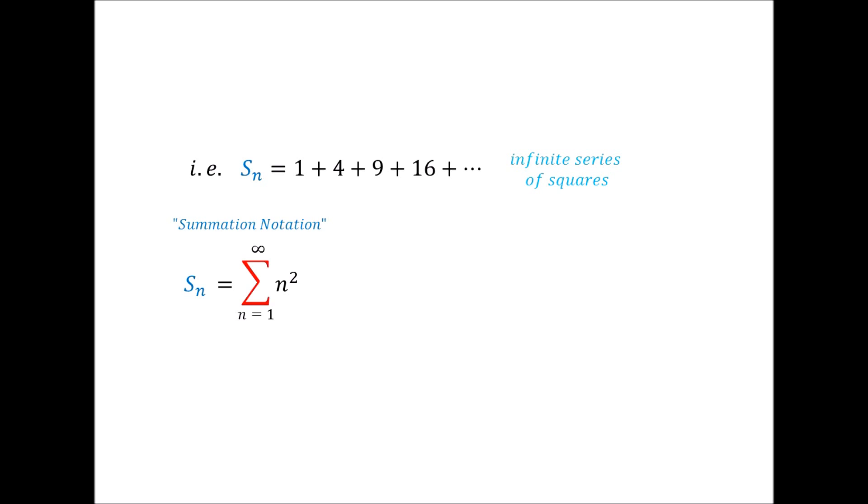Now don't get intimidated by this. This fancy looking E you see here is just the uppercase Greek letter sigma. And all it means is that we take the sum of the terms that obey the following rule, in this case n², written to the very next of the sigma, from n = 1 written on the bottom of the sigma, all the way to infinity written on the top of the sigma. In other words, we start with n = 1 and have 1, then n = 2 and add 4, then n = 3 and add 9 and so on, all the way to infinity, getting our series written in the long notation.